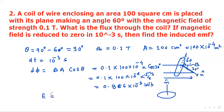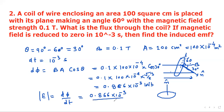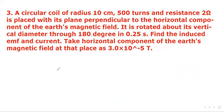Now E = |dφ/dt| = 0.866 × 10⁻³ divided by 10⁻³ seconds = 0.866 volts.